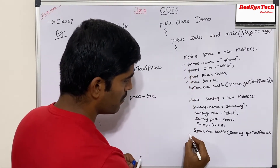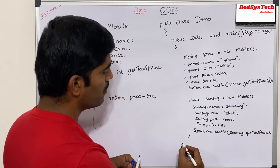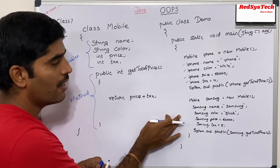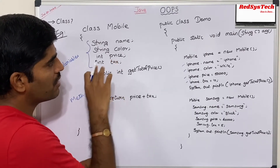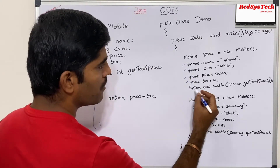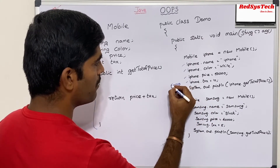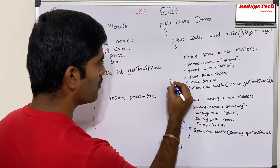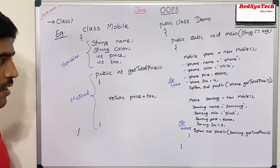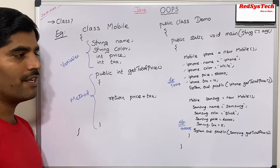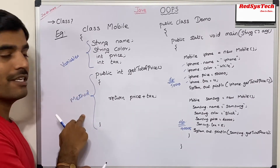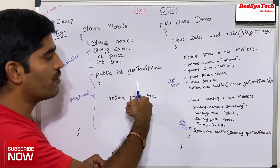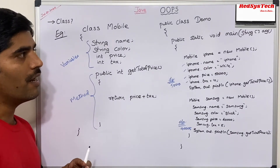Now we close the main method and close the main class. We have created two objects — one is iPhone, another is Samsung — using the Mobile class as a blueprint to create two new objects. The expected output for iPhone should be 50010 and for Samsung should be 40005.